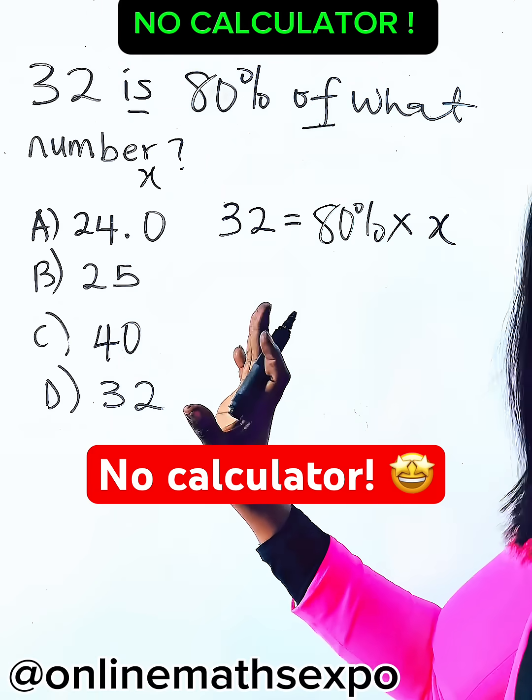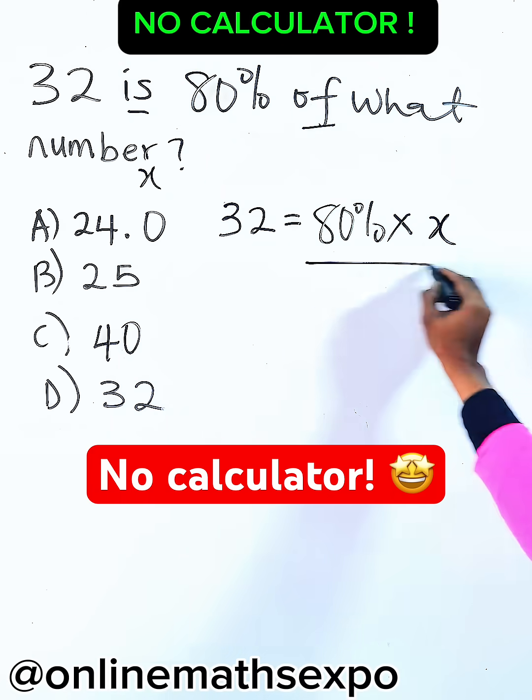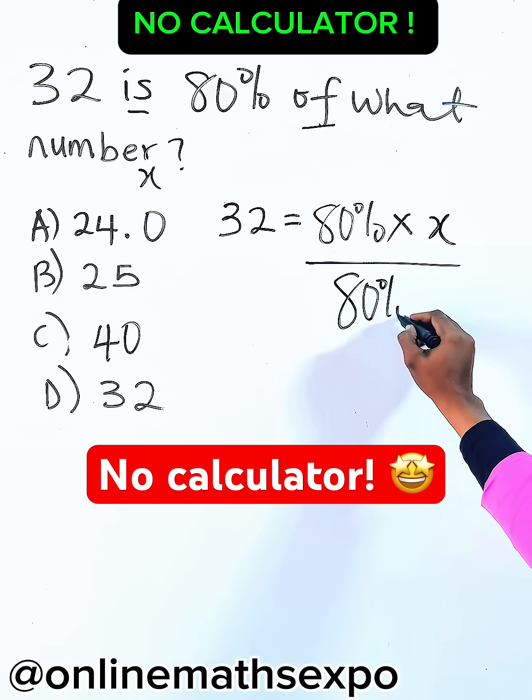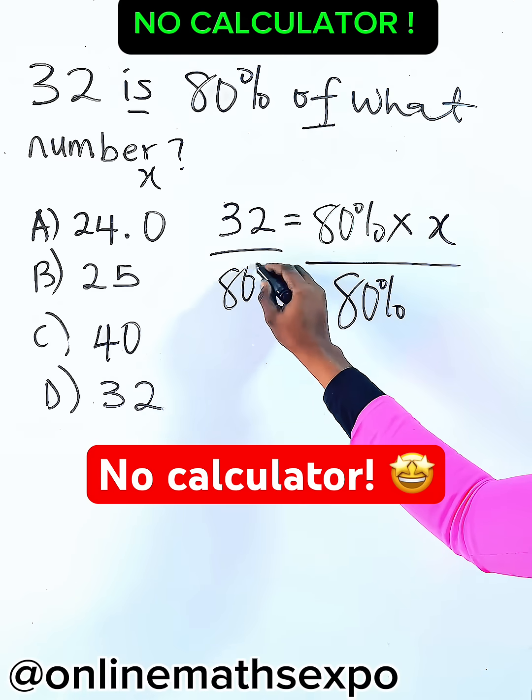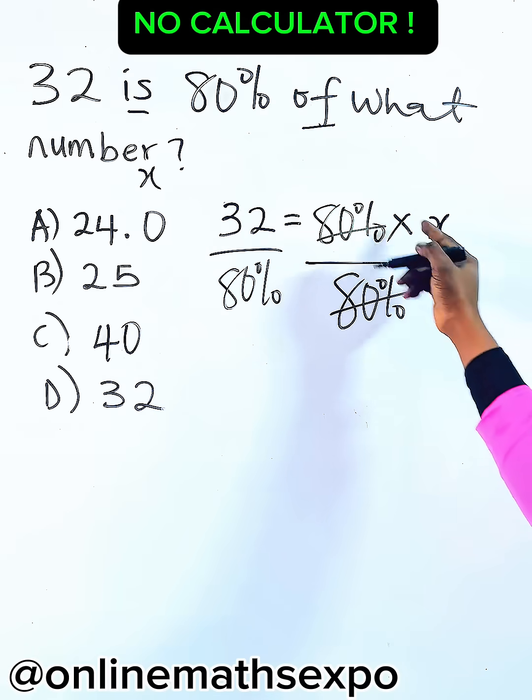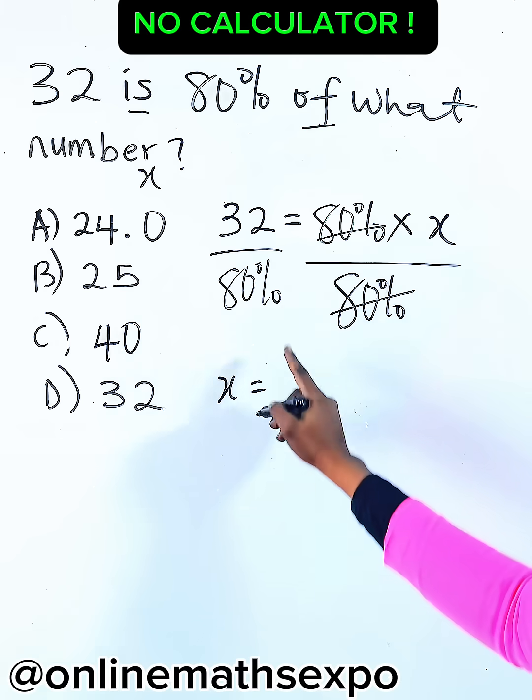You are done. This is what you want to get. So to get it, divide both sides by 80 percent. Okay, so when you do that, this will take off, so you have x.